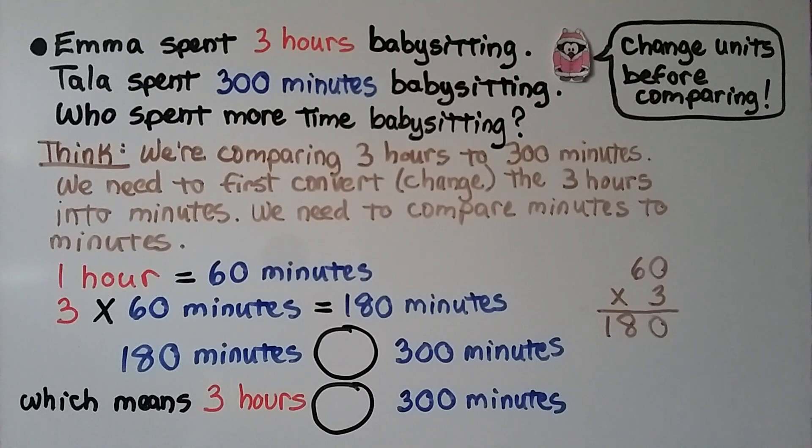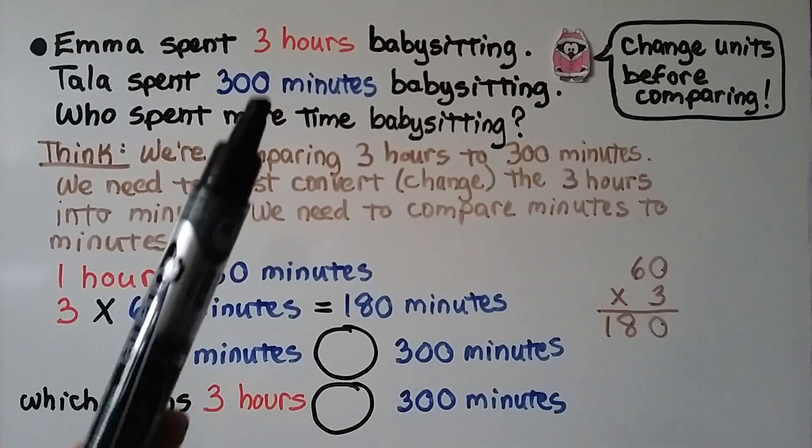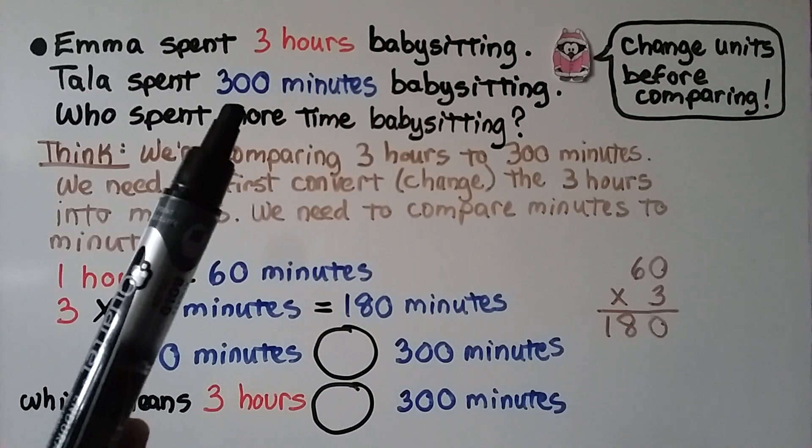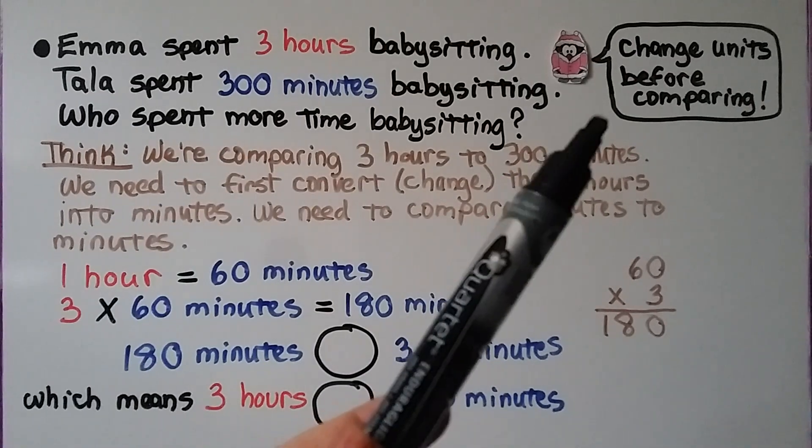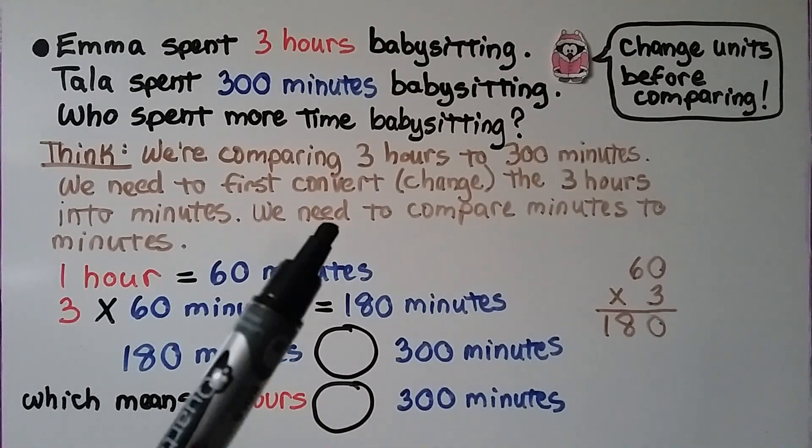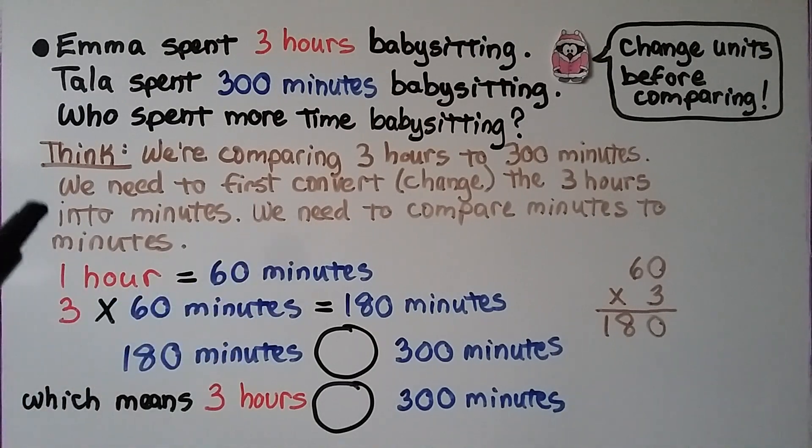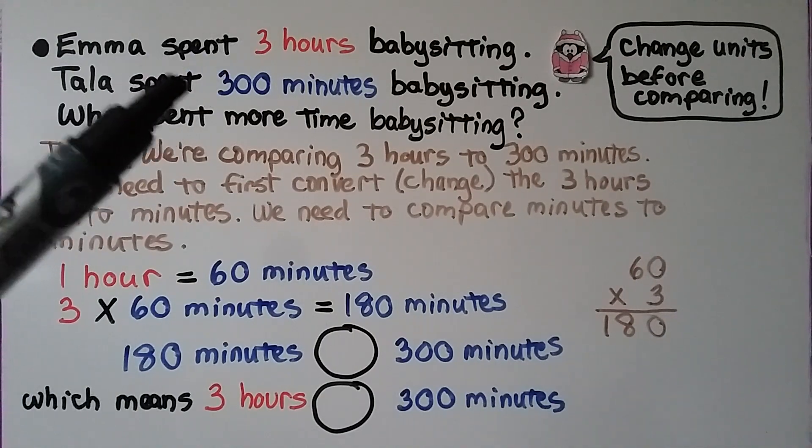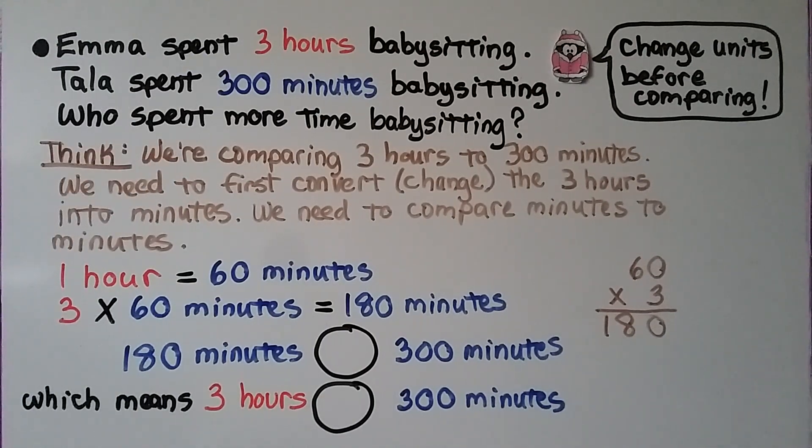Emma spent 3 hours babysitting. Tala spent 300 minutes babysitting. Who spent more time babysitting? We're comparing 3 hours to 300 minutes. We need to change units before comparing. Because we're comparing 3 hours to 300 minutes, we need to first convert, that means change, the 3 hours into minutes. We convert the larger units into the smaller units.